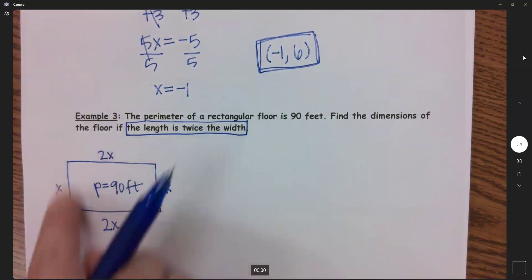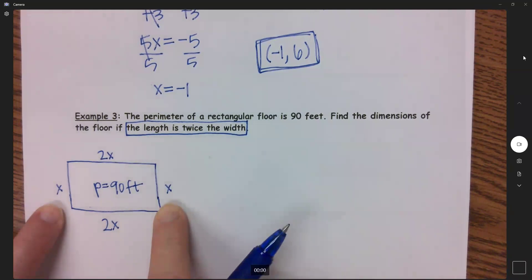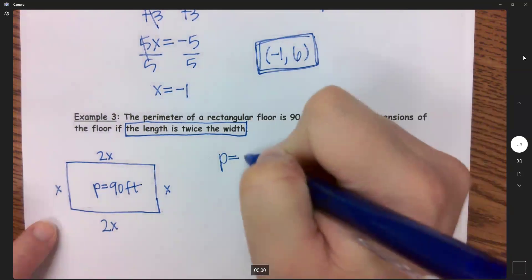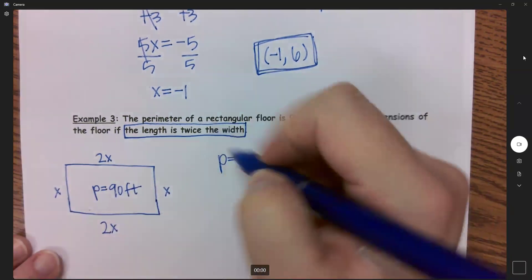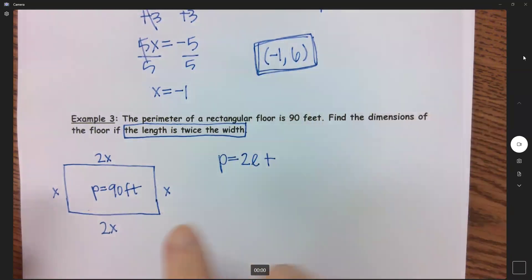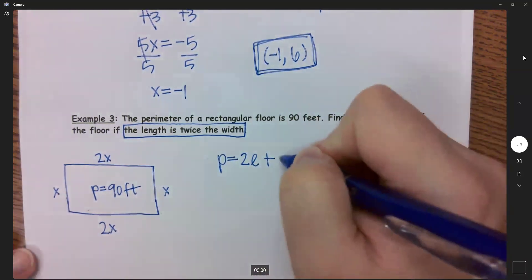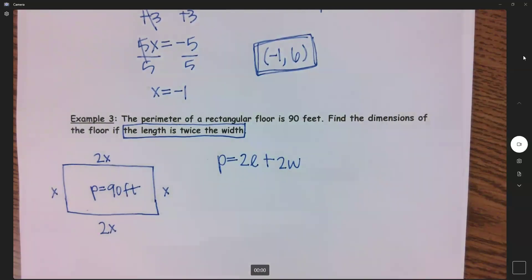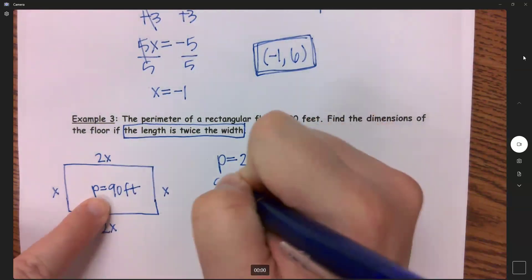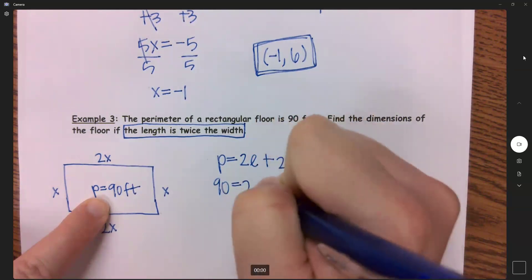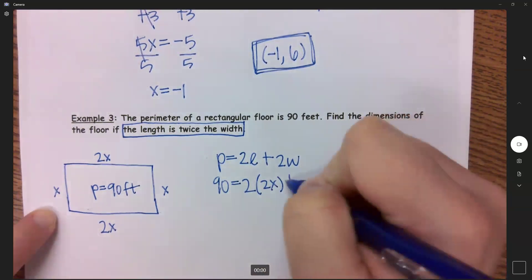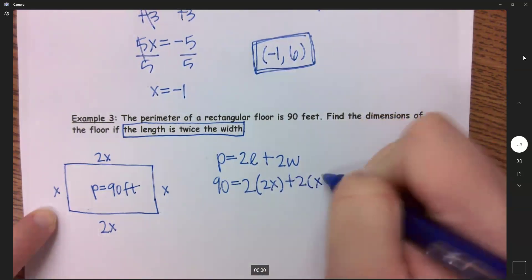So your formula for perimeter is we have two links. Or sorry, we have two lengths. So we have 2L plus 2W. Or you could do length plus width plus length plus width, whatever you want to do. And I'll substitute everything in. My perimeter is 90. My length is this 2x. My width is just x.